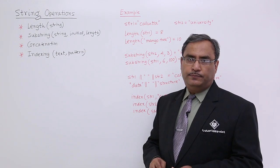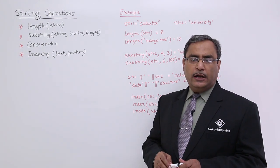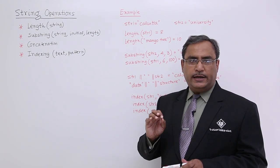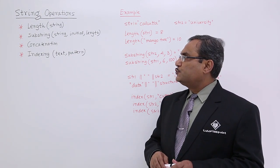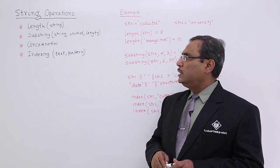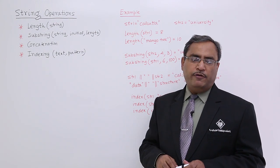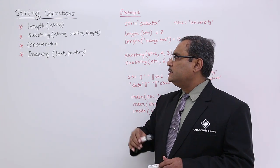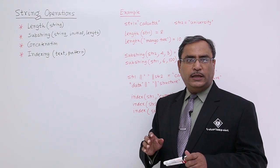One function is length, which takes the string as input argument and finds out the number of alphabets or characters residing in that given string. Next is substring, which takes three input arguments: the string, initial position, and length. Next is concatenation, one of the very important string operations. And the last one is indexing, where text and pattern are the input arguments.